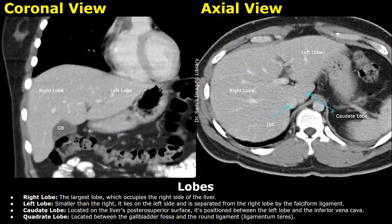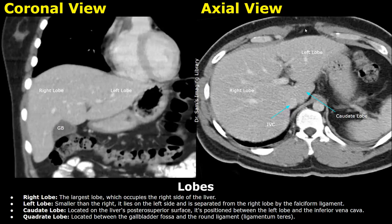Now we will look at the lobes of the liver. The largest lobe is the right lobe, which occupies the right side of the liver. This is the right lobe in the coronal plane, and here is the right lobe in the axial image. The left lobe is smaller than the right lobe. The right and left lobes are divided by the falciform ligament, which is present at this location. This is the fissure for the falciform ligament — this hypodense line divides the liver into right and left lobes and can be seen in both coronal and axial planes.